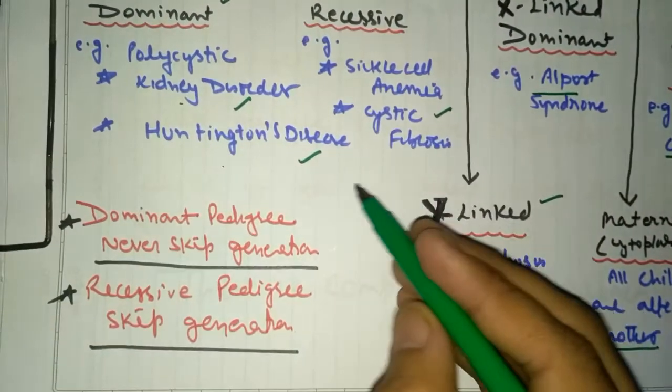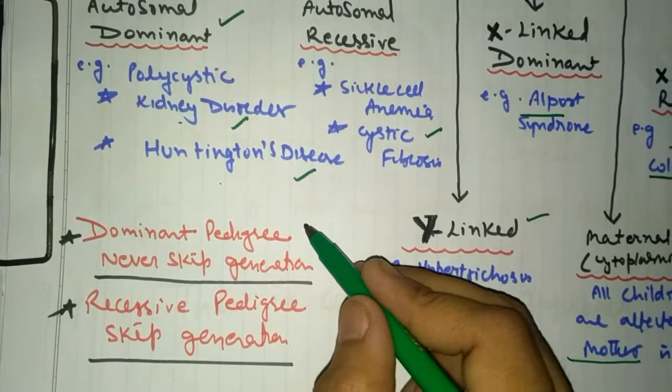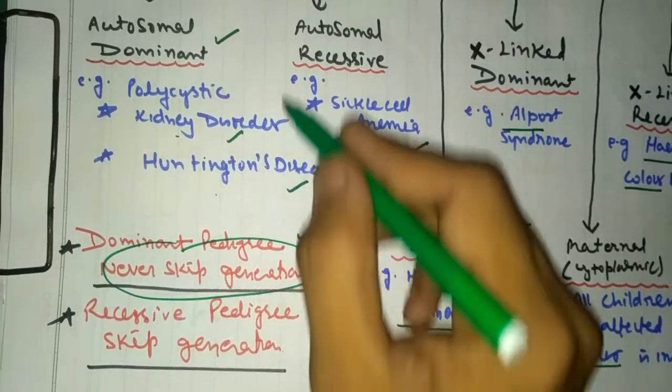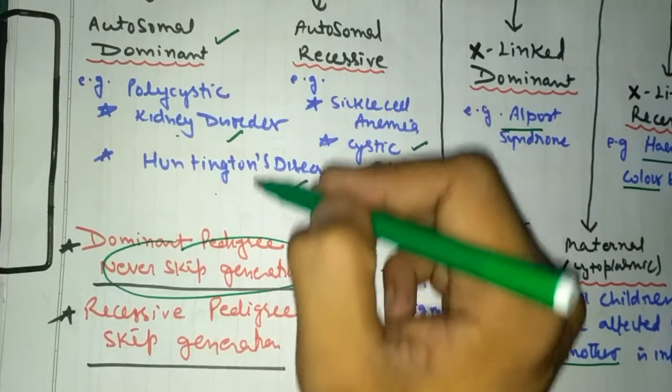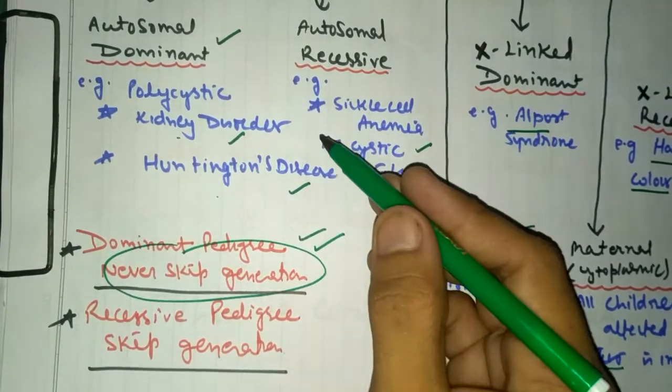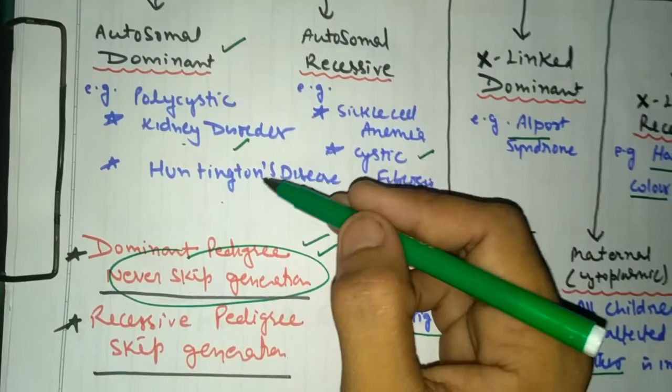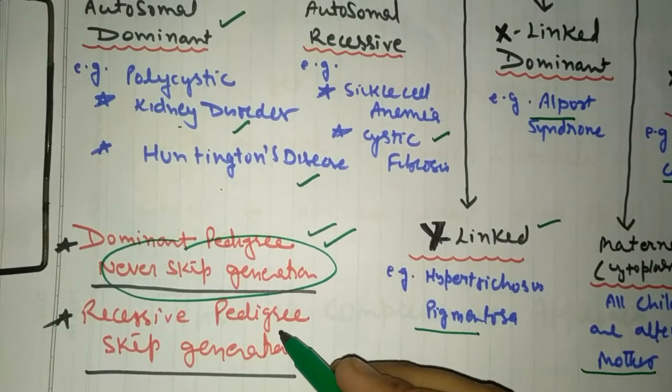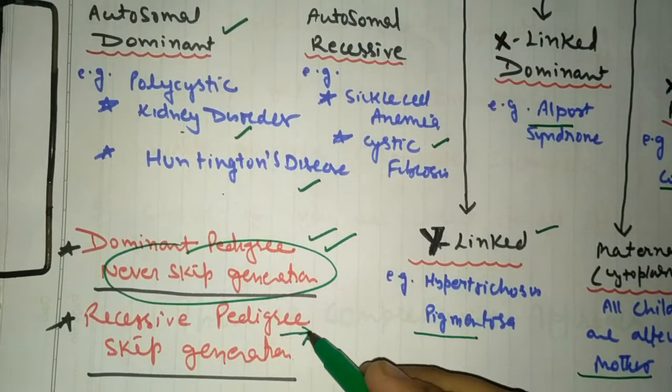Here is a clue for you. In dominant pedigree, the generation never skips. The character constantly comes in offspring. If there is a disorder, it constantly comes in the next generation. If it is recessive, the character is skipped.